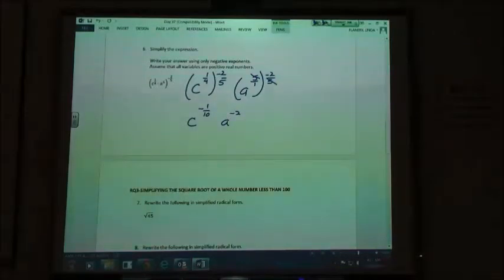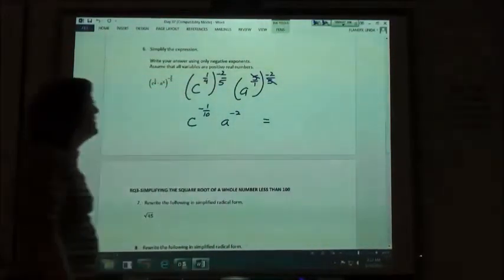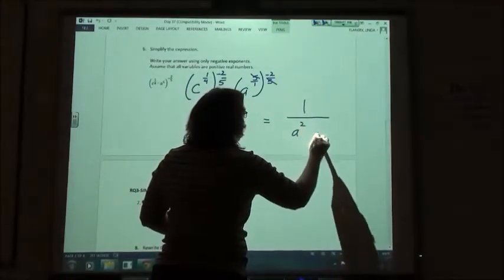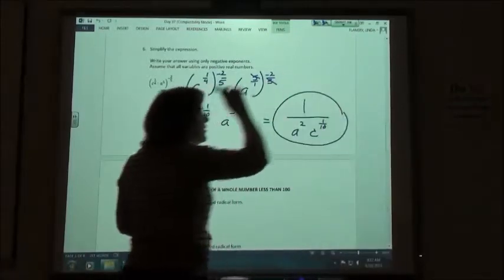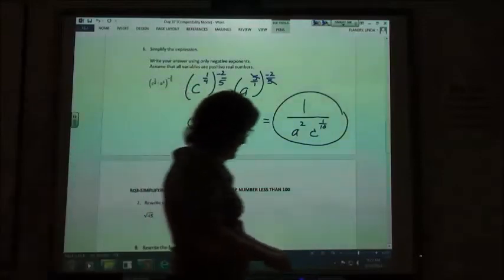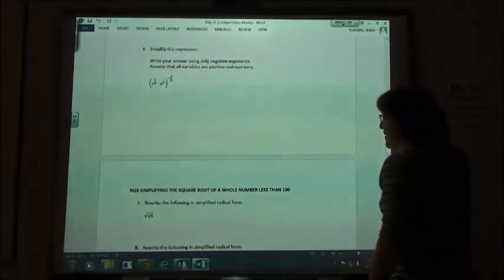Both of these have negative exponents, so how am I going to write my answer? One over a to the... And if you put the c first, it's okay. Since we have our commutative property, whatever order you put them in. But they like them alphabetically, so that looks prettier. So one over a squared times c to the one-tenth.